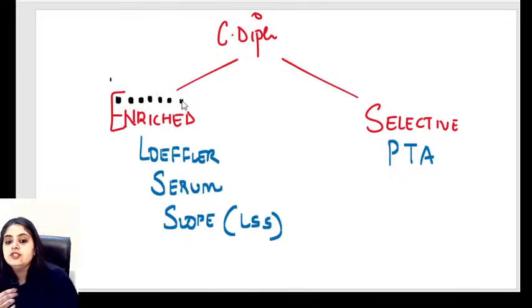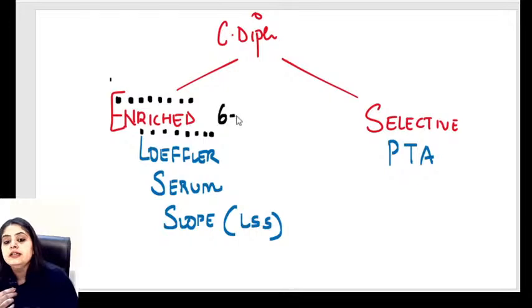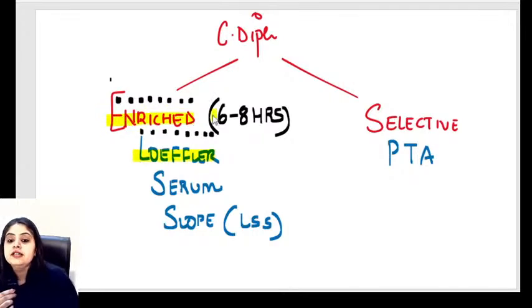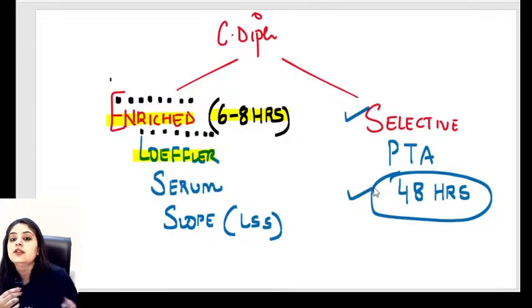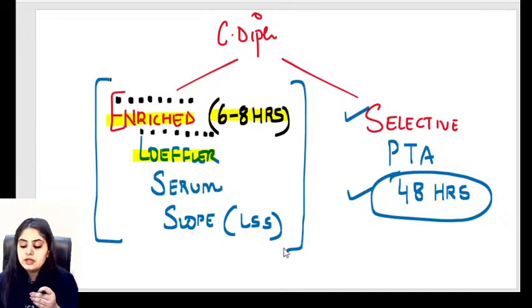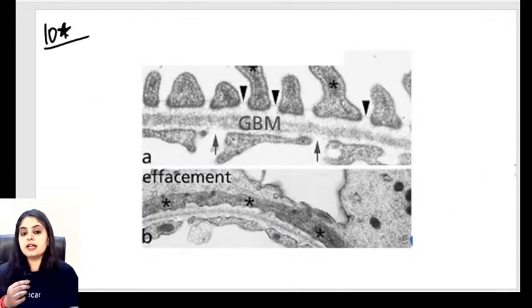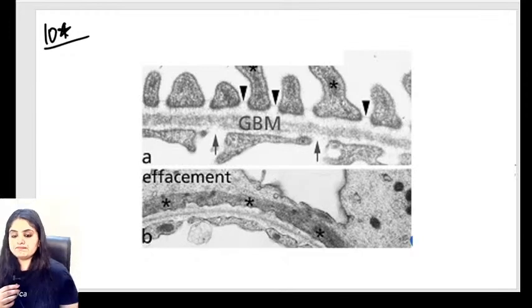This is the classical filtration membrane of the glomerulus. It has three layers: on the outside — podocytes or visceral epithelial cells; in between — the glomerular basement membrane (GBM); on the inside — endothelial cells. GBM, like any basement membrane, is made up of type 4 collagen.